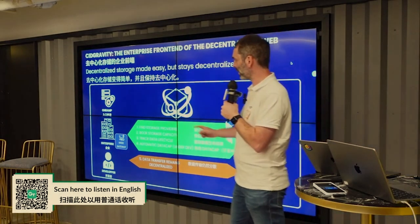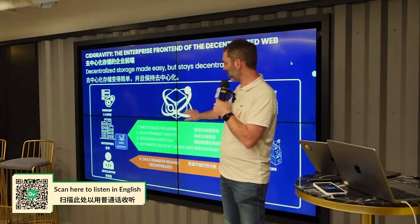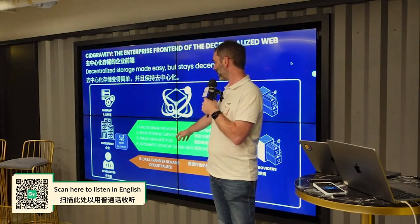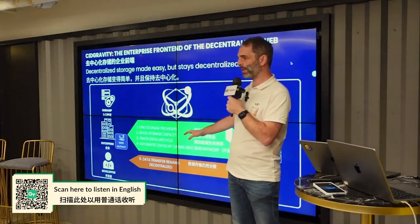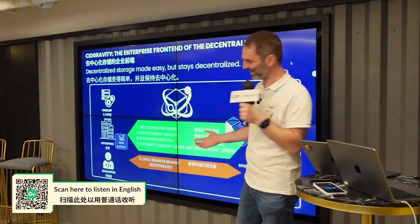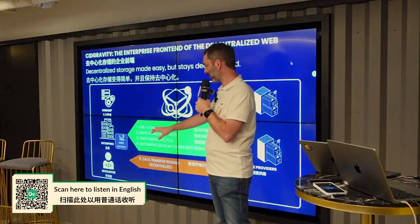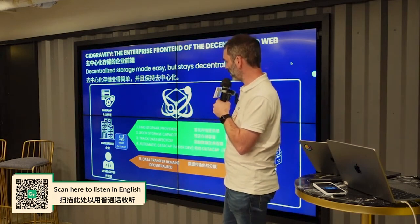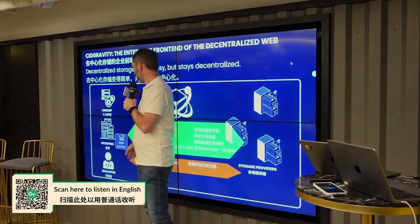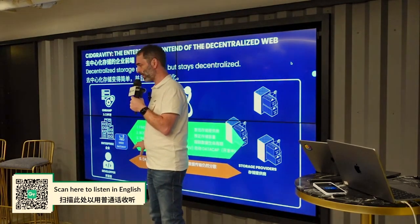How do you consume CID Gravity? If you are an integrator, an enterprise, or a developer, you use our service to find storage providers, book capacity with them, track their data life cycle, and soon you will get access to automatic data cap allocation — essentially free credits to the network. All the data will remain fully decentralized, meaning clients send data directly to the storage provider and retrieve it directly from them. To make it even easier, we provide a Web2 gateway so you don't need to understand anything about Filecoin — the gateway manages everything for you.